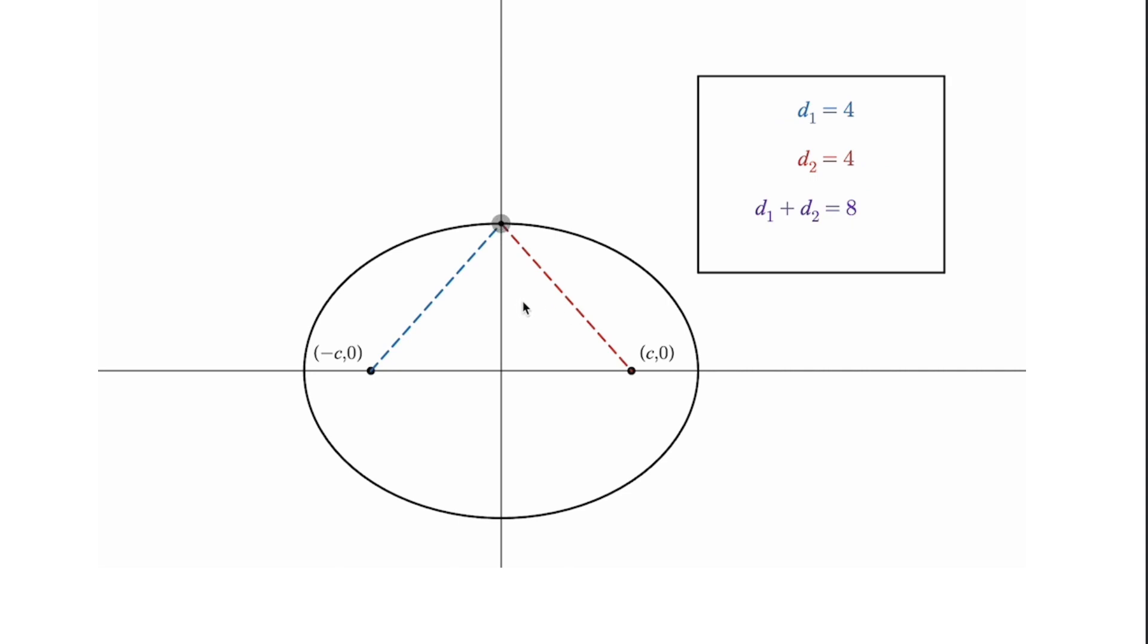That point right there is where the distances are the same, 4 and 4 to make 8. That should make sense because this is directly in between the two foci, at least the x coordinate is.